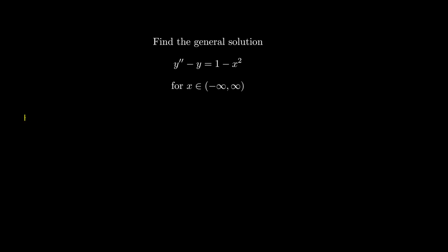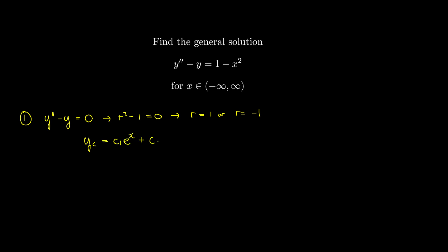First, let's find the complementary function by solving the associated homogeneous equation. From this we can write the auxiliary equation, which gives two solutions: r equals 1 or r equals negative 1. So e^x and e^{-x} are linearly independent solutions, and the complementary function is yc = c1·e^x + c2·e^{-x}.